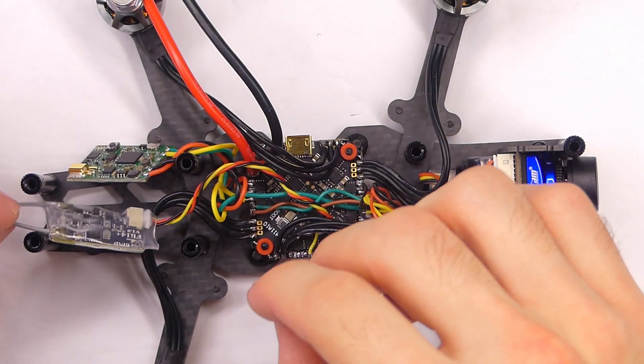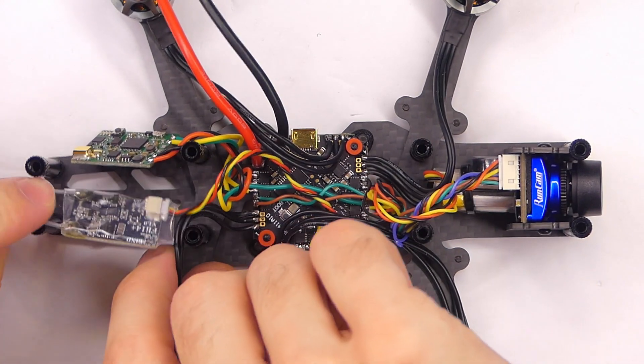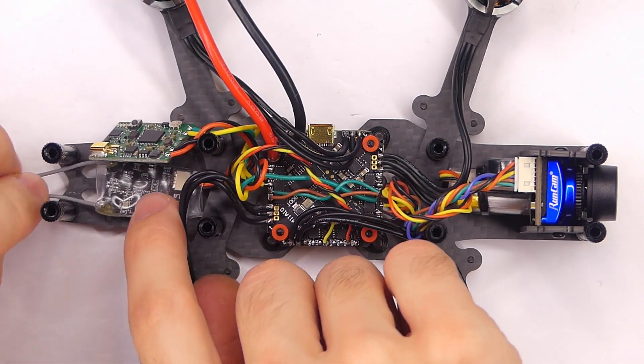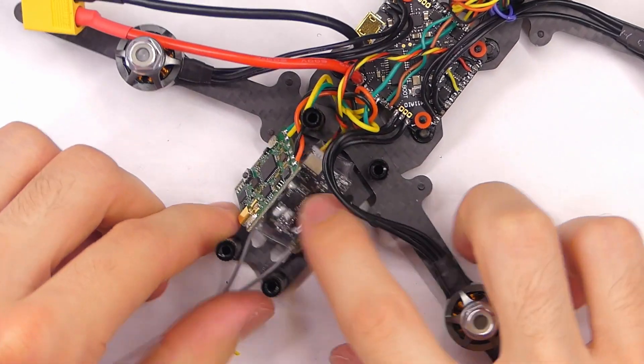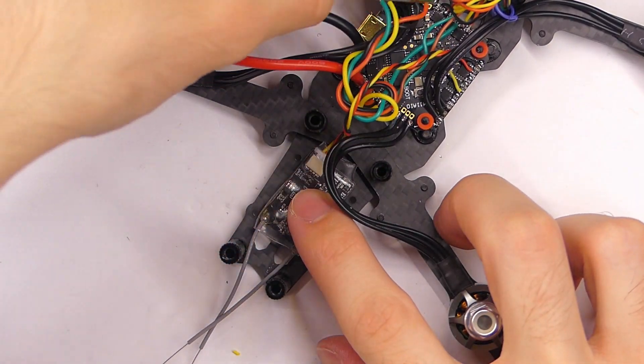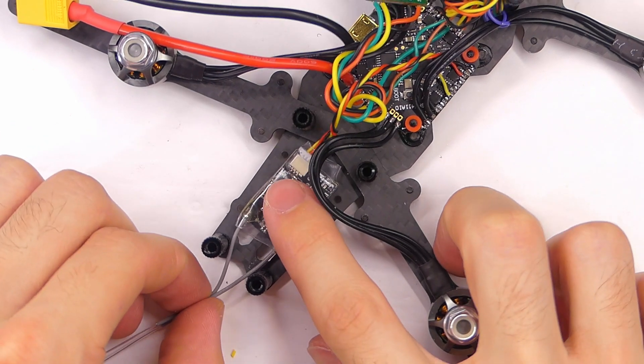Okay, now we are going to put our video receiver in place. That will just go right here on the bottom of the frame on the back. And that should be pretty simple.